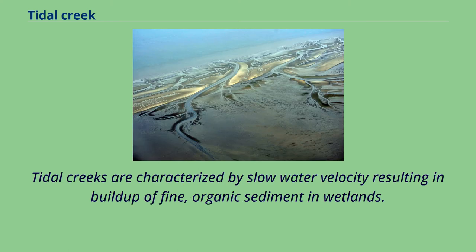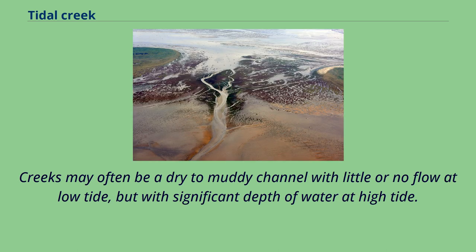Tidal creeks are characterized by slow water velocity resulting in buildup of fine, organic sediment in wetlands. Creeks may often be a dry to muddy channel with little or no flow at low tide, but with significant depth of water at high tide.